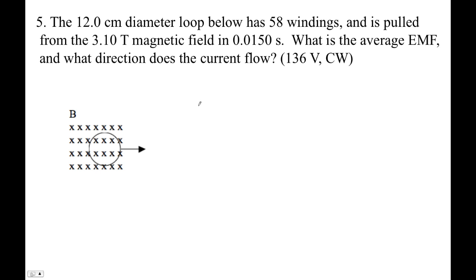All right, so for the final one, we've got a 12-centimeter diameter loop. It's got 58 windings. It's pulled from the field in a certain amount of time.